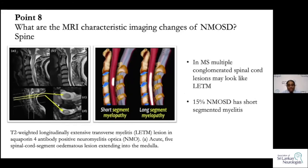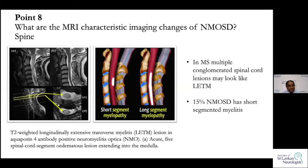Point eight: what are the MRI characteristics of NMOSD spine? Long-segment myelitis — extending more than three spinal segments, usually with central cord involvement — is generally seen in aquaporin-4 disease. Short-segment myelopathy is usually seen in other conditions like MS. However, in about 15% of aquaporin-4-positive cases you might see short-segment myelopathy, which must be kept in mind when evaluating the spine.